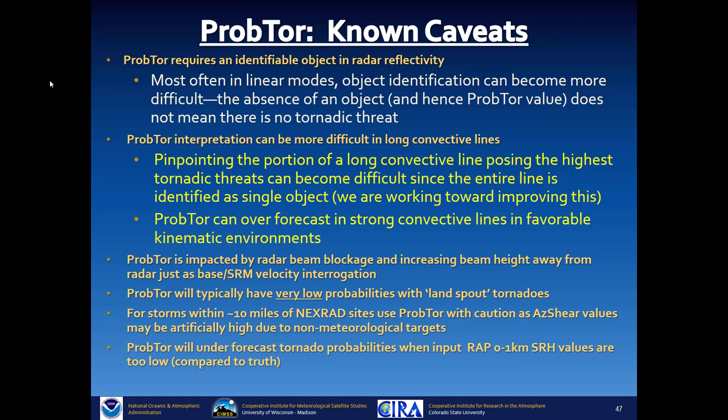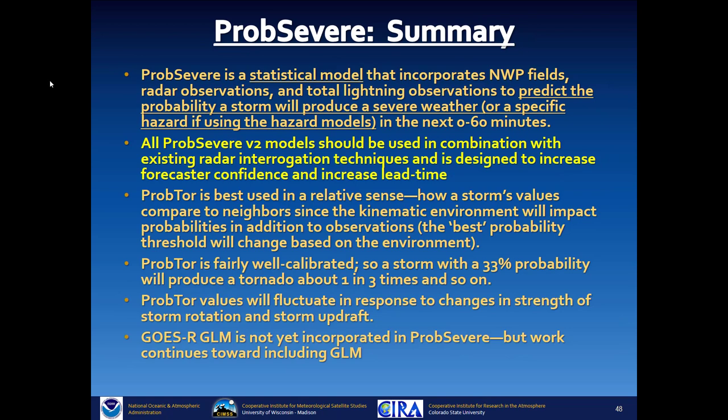Additional caveats: PROB TOR will typically have very low probabilities with landspout tornadoes. PROB SEVERE is a statistical model incorporating numerical weather prediction fields, radar observations, total lightning observations, and in some cases satellite growth observations, to predict the probability that a storm will produce severe weather in the next 0 to 60 minutes. Use PROB SEVERE in combination with existing radar interrogation techniques — it is designed to increase confidence and lead time for warning issuance. PROB TOR is best used in a relative sense, comparing a storm's values to its neighbors, since the kinematic environment will impact probabilities.